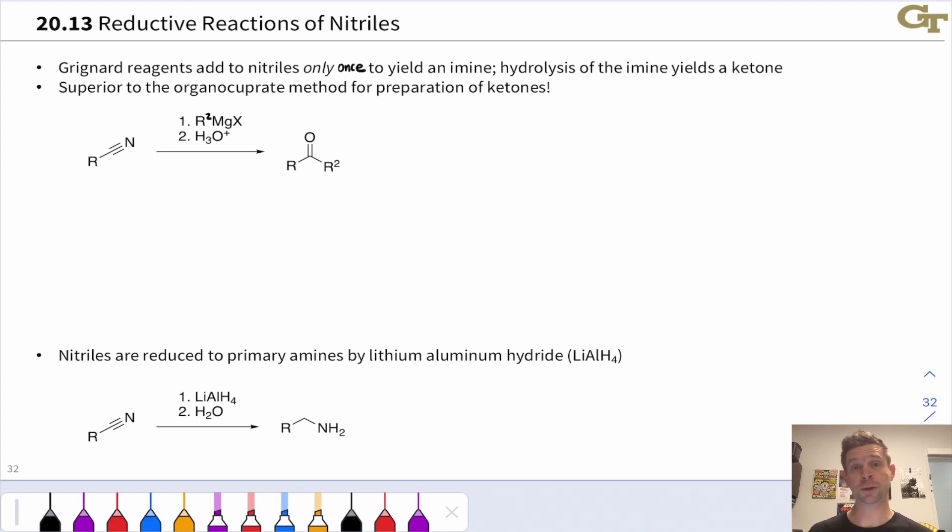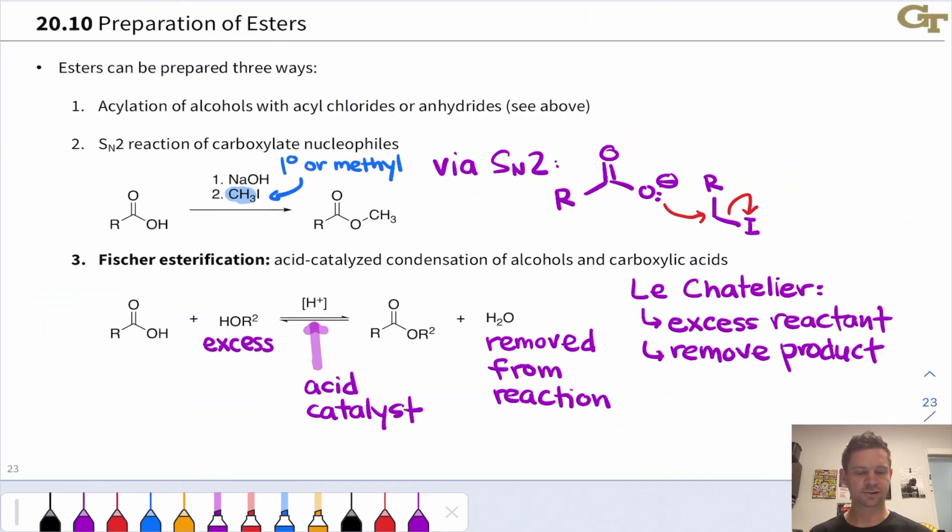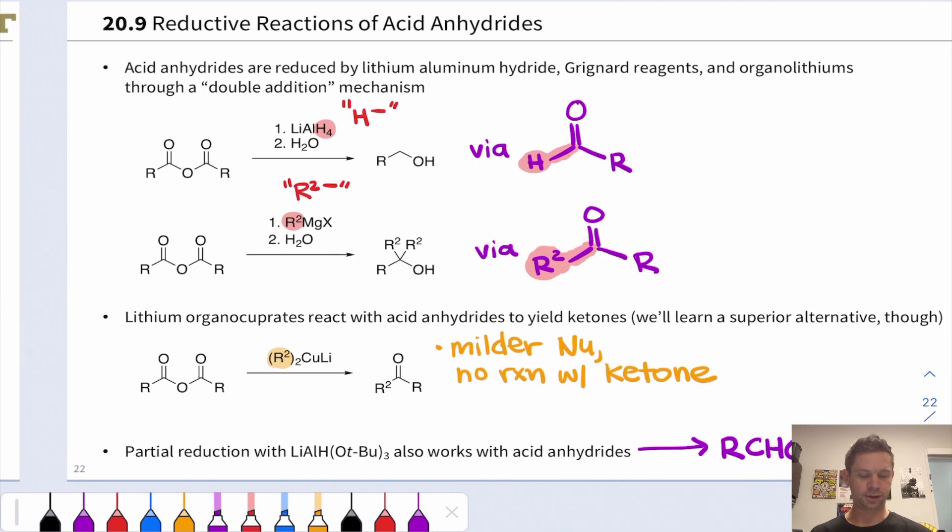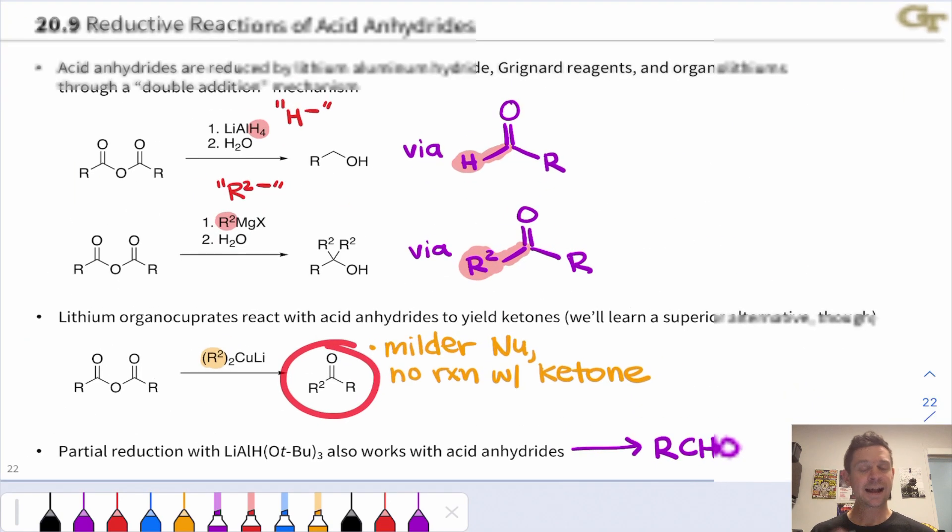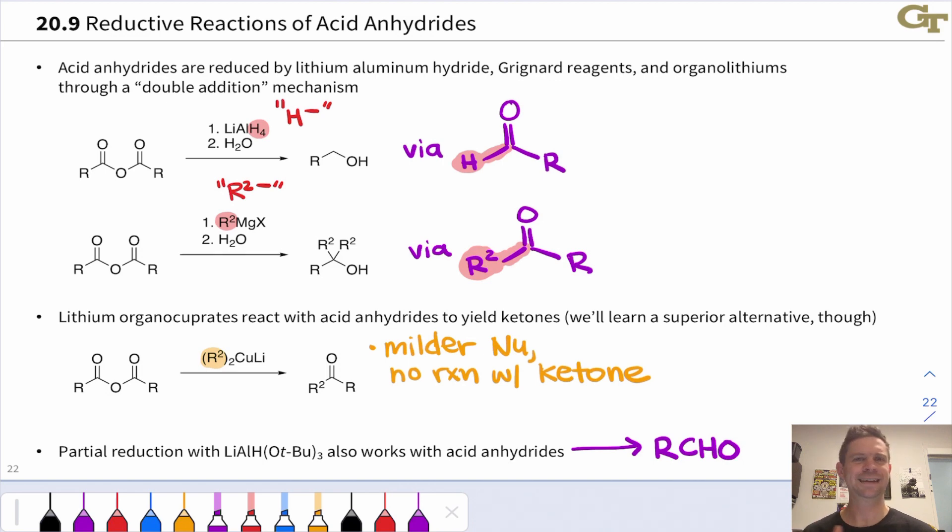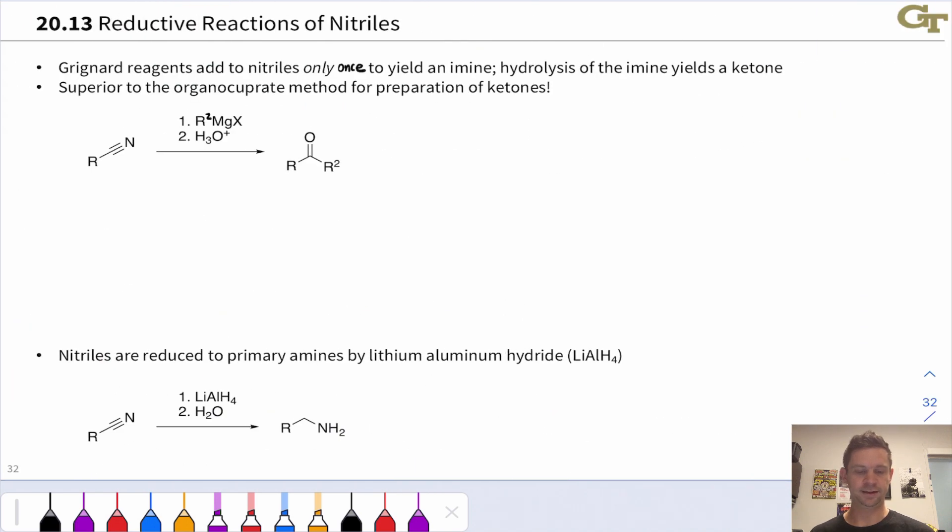Like carboxylic acid derivatives, nitriles undergo reactions with reducing agents, including organometallics like Grignard reagents and organolithiums. But they've got a nice quirk about them that allows us to synthesize ketones from nitriles. Recall that previously we saw that acyl chlorides and anhydrides can react with lithium dialkyl cuprates to give ketones. The nitrile opens the door to an alternative way to do this that is, in my experience, easier to remember than this lithium diorganocuprate approach.